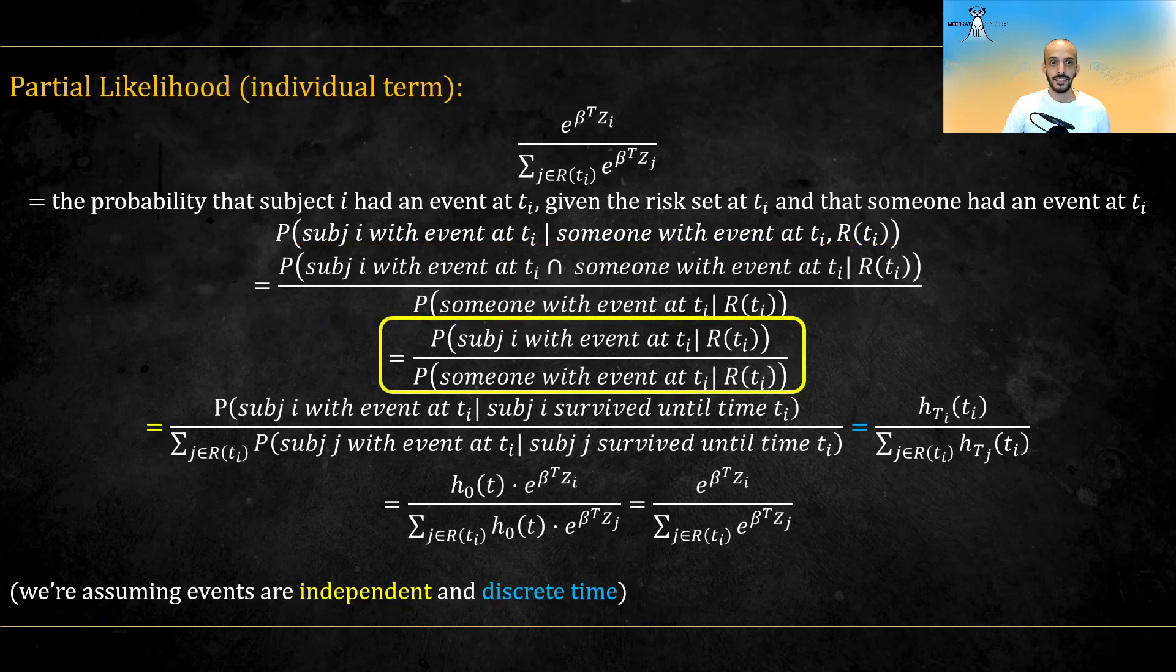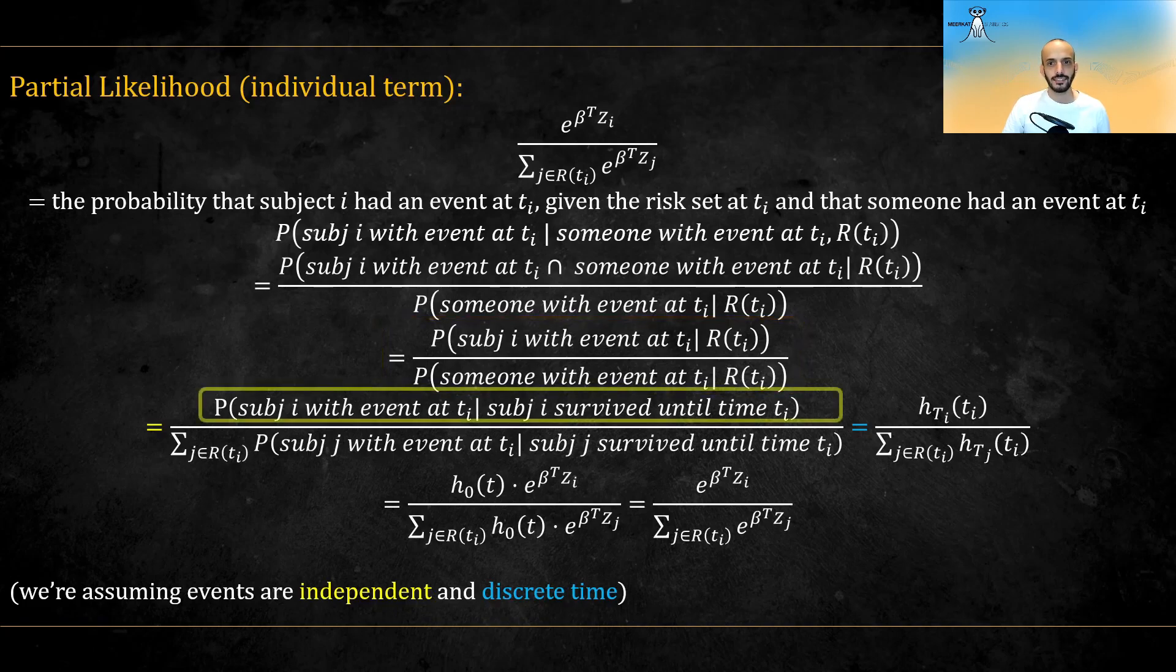Assuming the events are independent, the only information given by the risk set is that subject i survived until ti. The fact that other subjects survived does not affect the probability of subject i to survive. Hence, we make this change in the numerator.